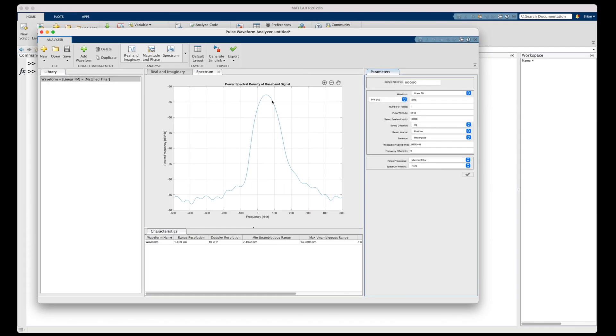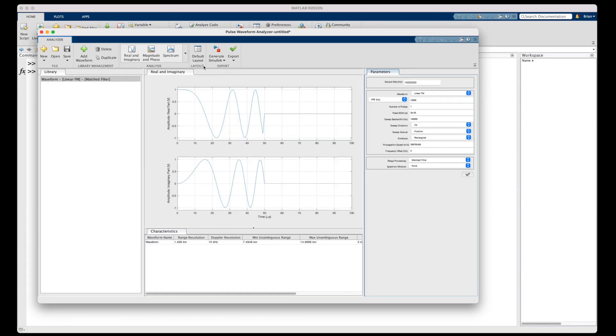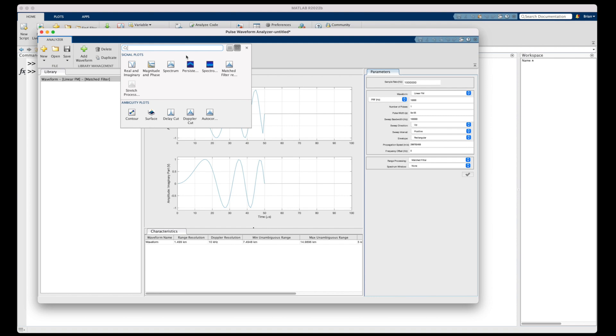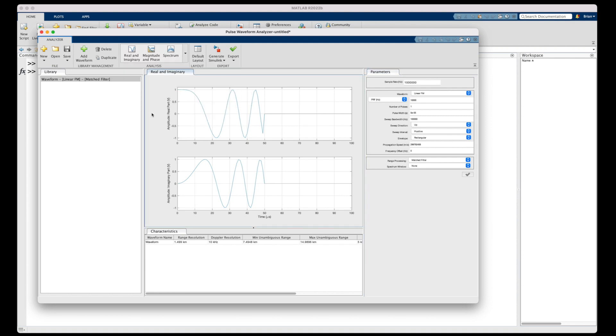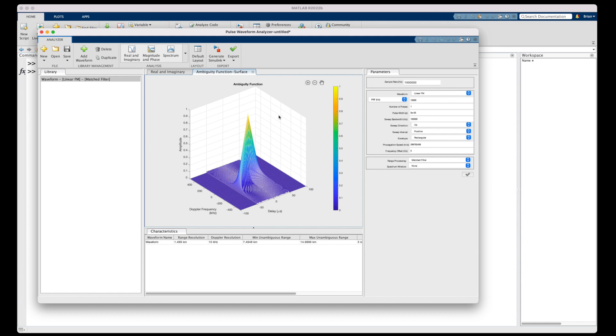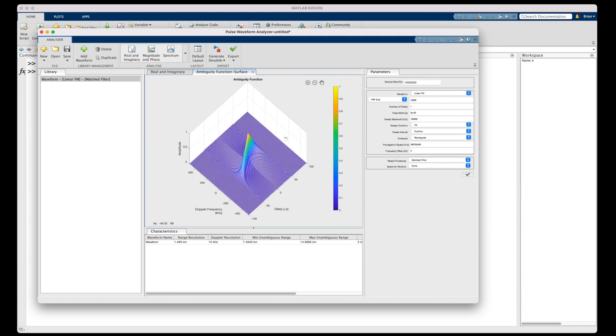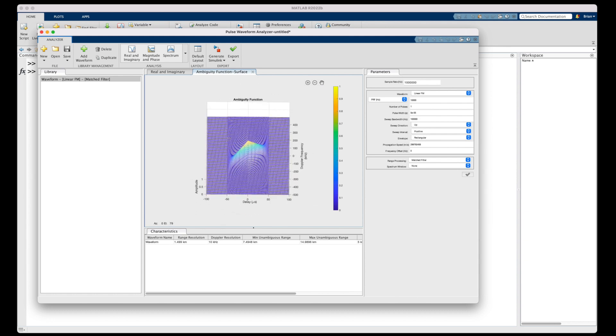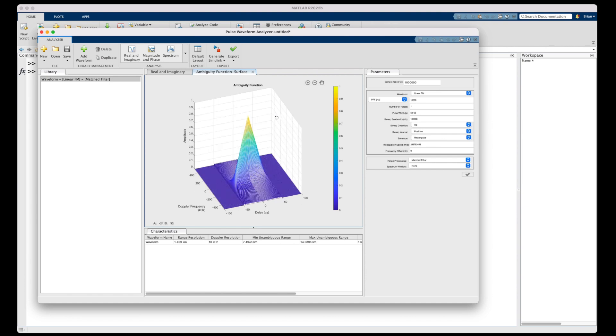All right. So on the plot side here, instead of the spectrum, let's look at the ambiguity plot. And we have several to choose from. But again, I'm going to stick with the 3D surface plot. And here it is. It's that familiar sharp peak that is diagonal across delay and Doppler.